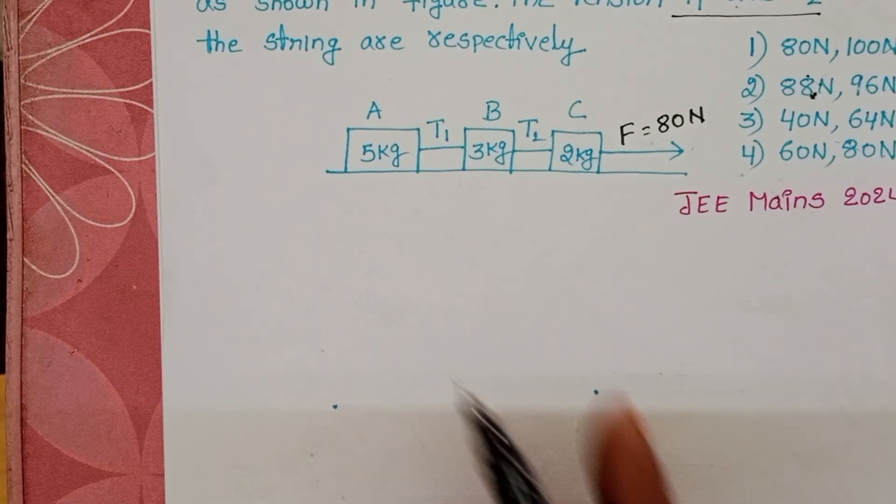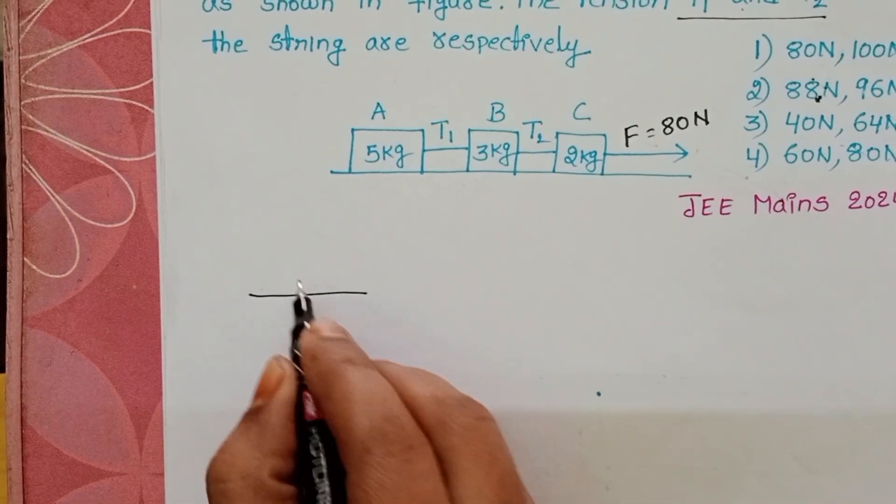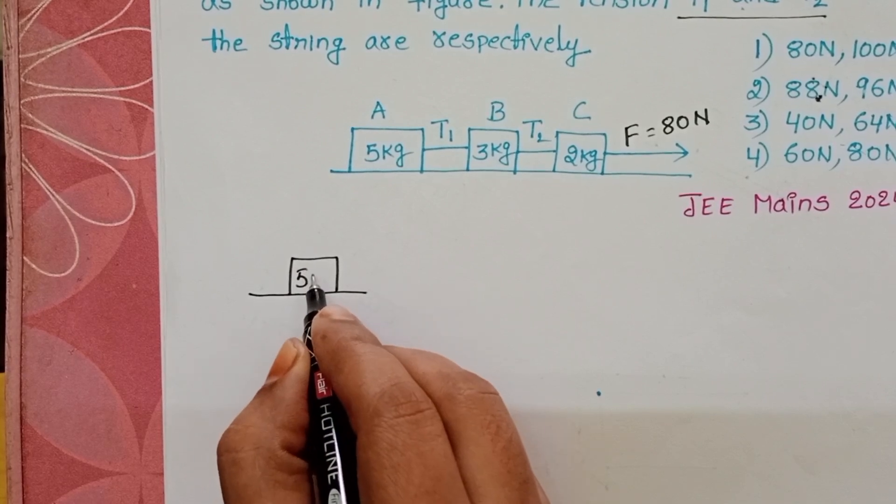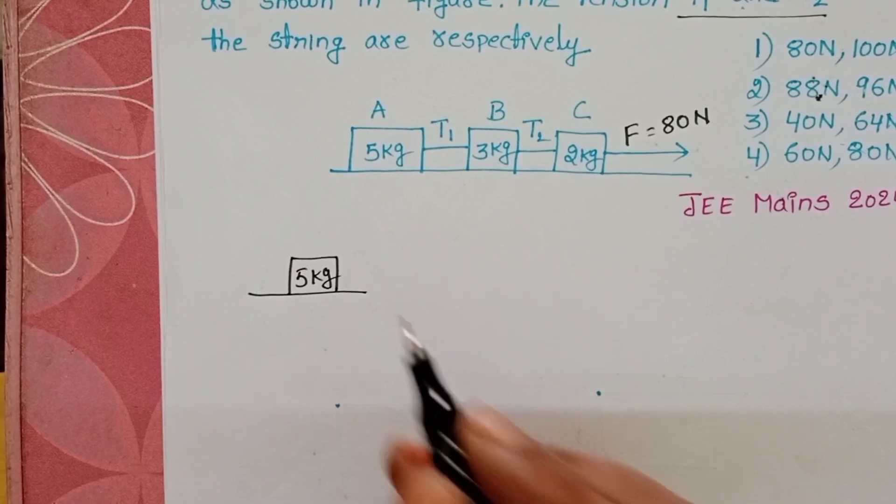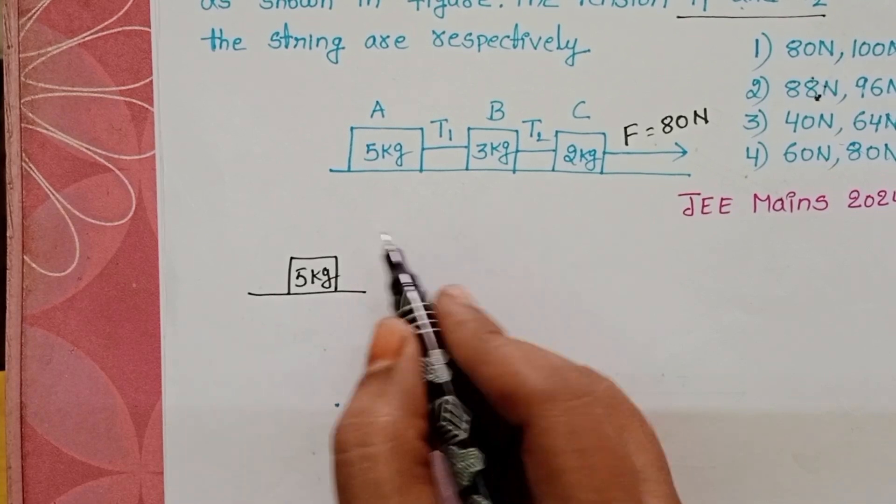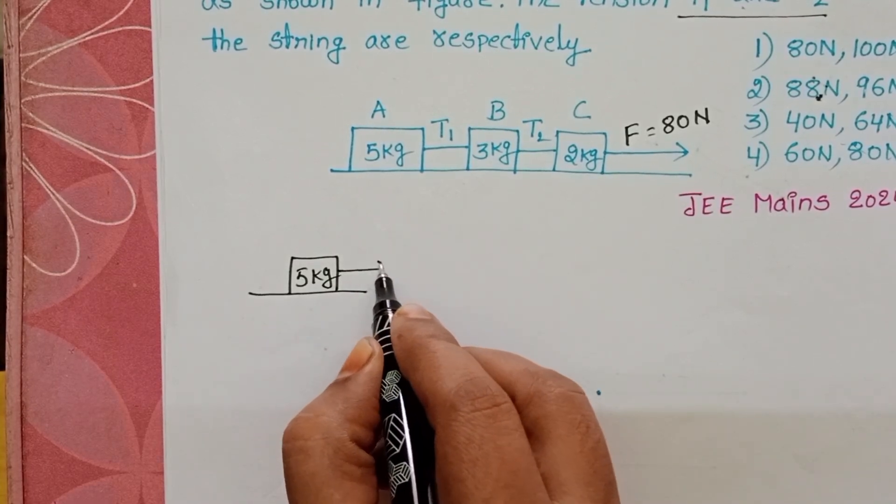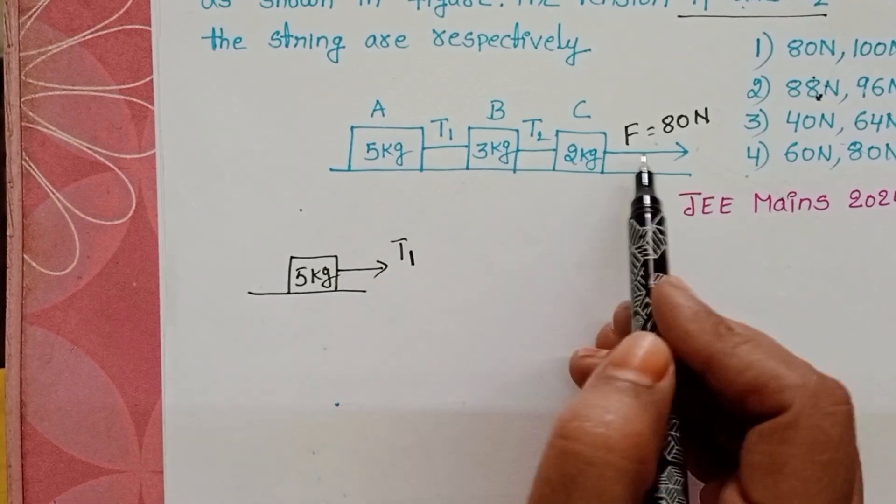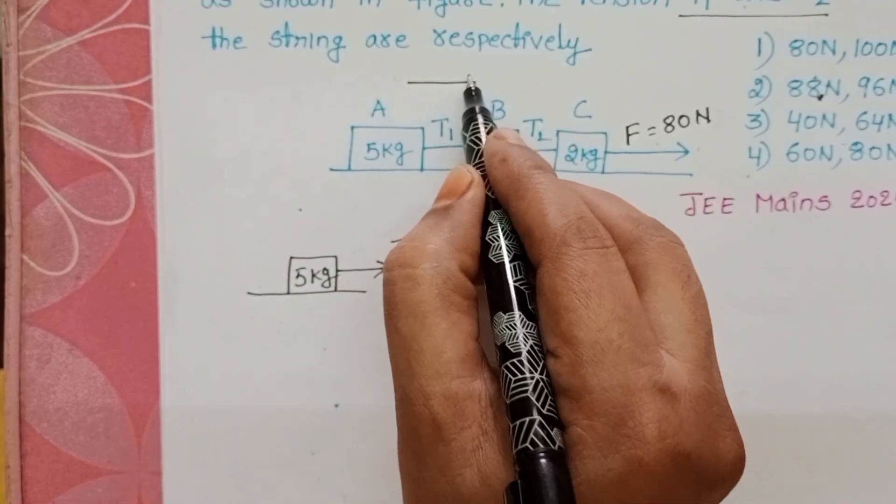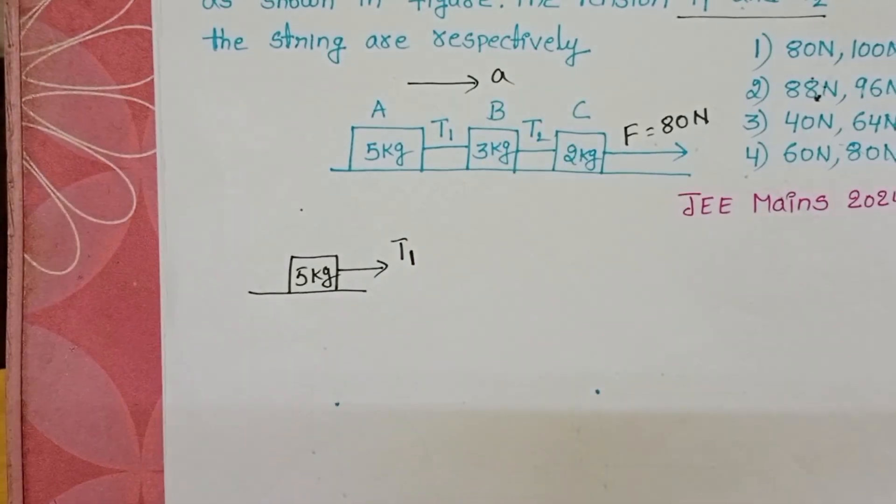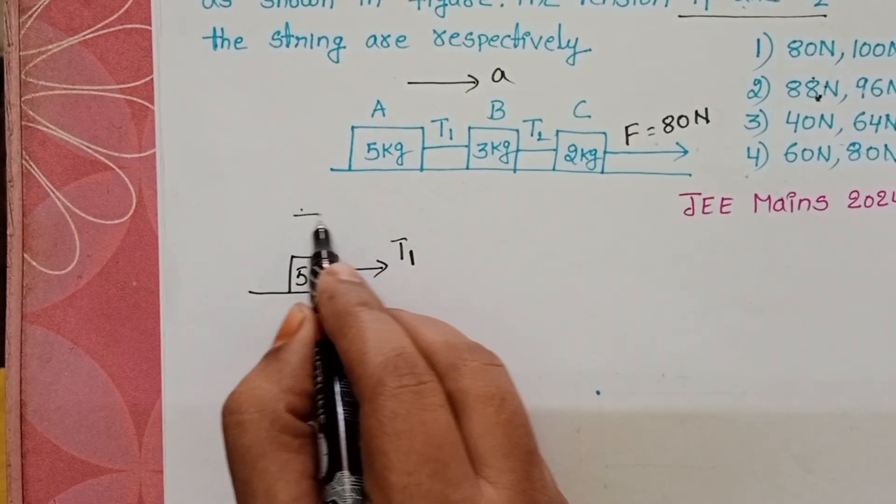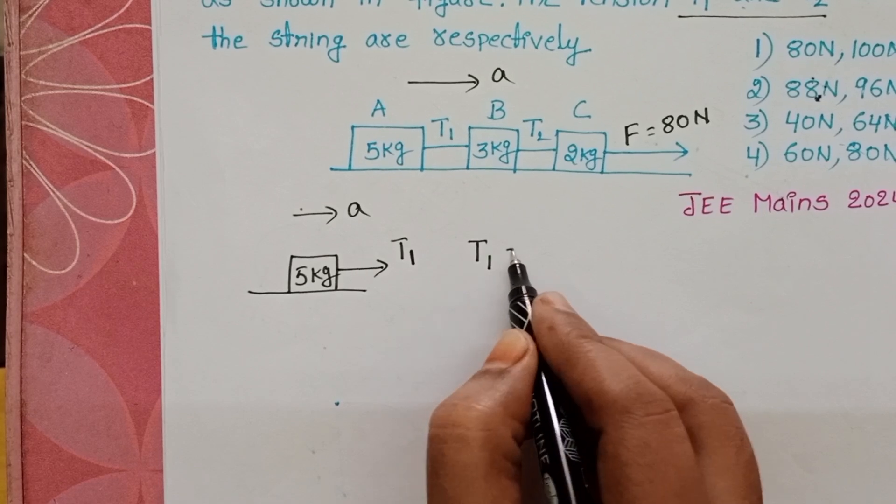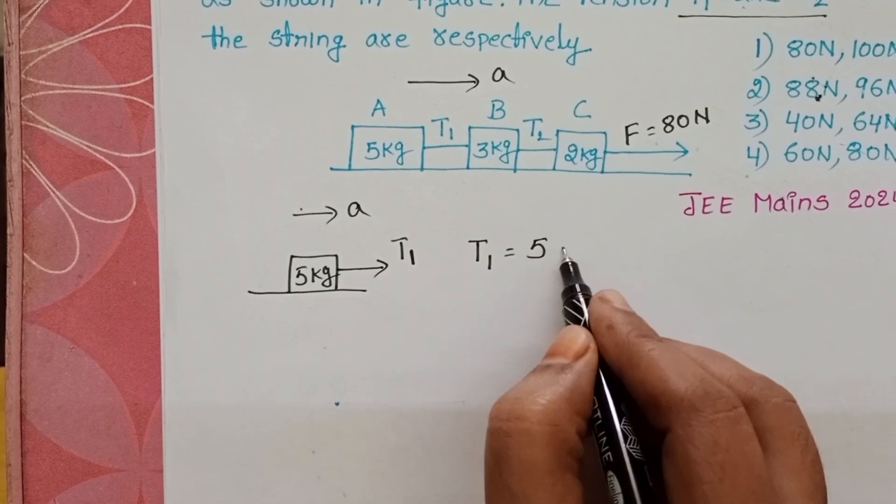First, draw the free body diagram of the 5 kg block. These three blocks are placed on the smooth horizontal surface, so there is no frictional force. On the 5 kg block, the only applied force is the tensional force. The total system is accelerated in the direction of the applied force, so this is the direction of the acceleration of this body. T1 equals 5A.